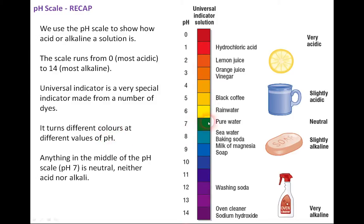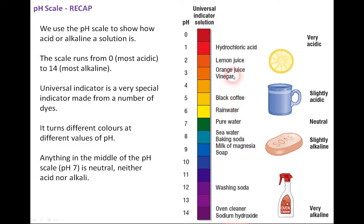Anything in the middle is seven — neutral. You've got some examples: anything that really washes or cleans, like washing soda or oven cleaner, is an alkali. Milk and magnesium soaps are slightly alkaline, though now they try to go for pH-balanced neutral soaps. Rainwater is slightly acidic due to acid rain. Then you have black coffee, orange juice, vinegar, lemon juice, going to hydrochloric acid — very acidic.